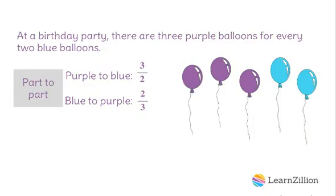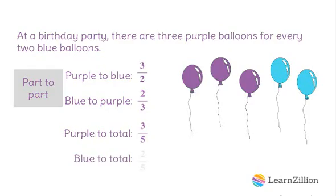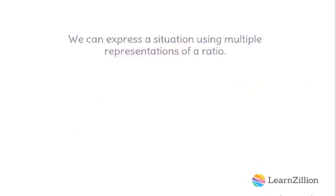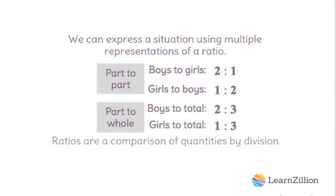We can also compare the number of each color balloon to the total number of balloons. We have three purple balloons out of a total of five balloons, which is a ratio of three fifths. Or we can look at the ratio of blue balloons to the total — two blue balloons out of five total, which is a ratio of two fifths. These kinds of ratios are called part-to-whole ratios. They compare the quantity of each color of balloon to the total quantity of balloons. We can express a situation using multiple representations of a ratio. Ratios are a comparison of quantities by division.